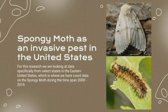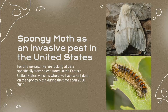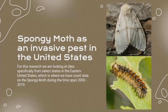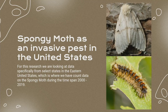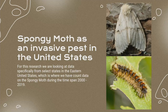Specifically for this data, I'm going to be looking at the spongy moth in the United States. That's the data we have for the occurrence of the spongy moth over a 2000 to 2019 time span, covering select states in the eastern United States, not the entire country. I've also included a picture of the spongy moth here on the right — on the top in its adult moth form, and on the bottom in its caterpillar form.